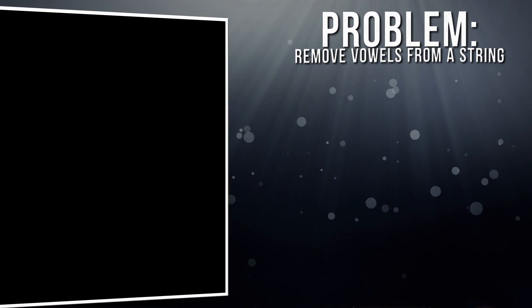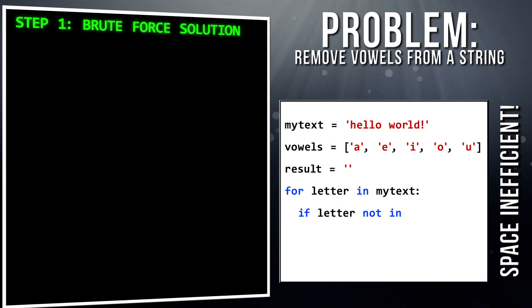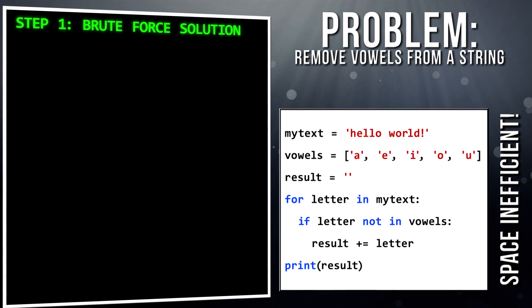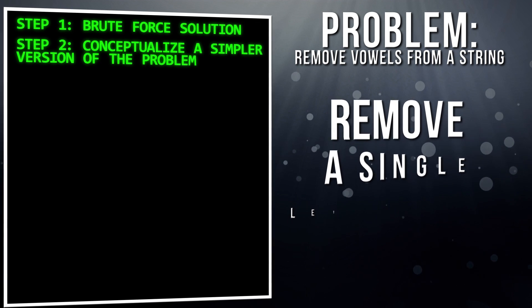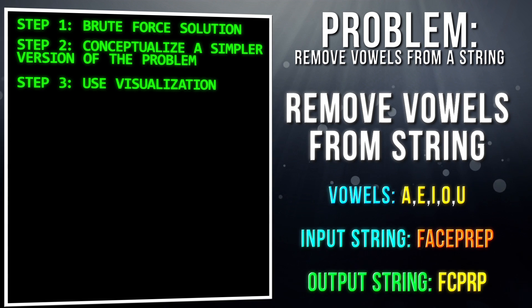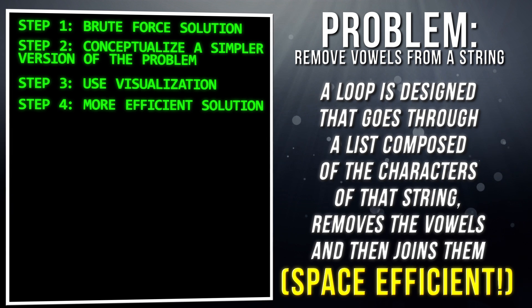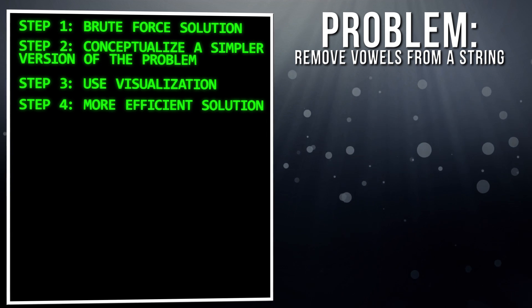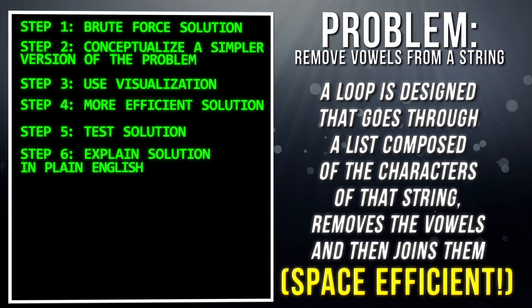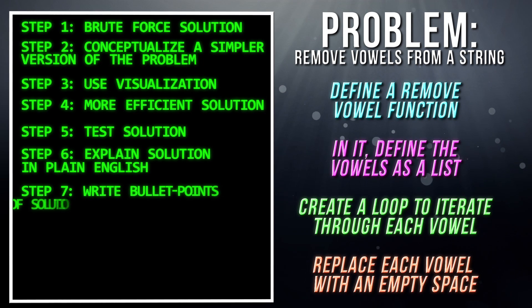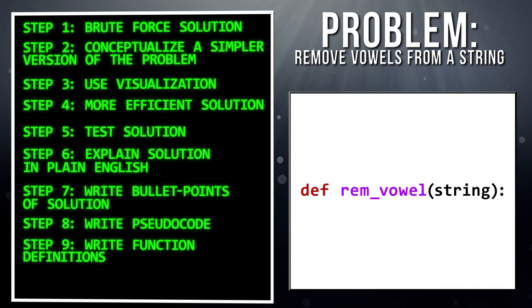I've defined a meta-algorithm for you, an algorithm that helps you solve algorithms. First, come up with a brute force solution. That means not necessarily the most efficient solution, but the one that will at least work. Then think of a simpler version of the problem. Try noticing a pattern with the simpler examples. Use a visualization to aid you in thinking about it. Then use the visualization and any patterns you learned from the simple example to try to come up with an even more efficient solution for the original problem. Then test your solution on a few examples to ensure it works. Once you have your solution, explain it out loud in plain English. Then write it out step-by-step as bullet points. Then write it out as pseudocode. Then the necessary function definitions. And finally, the implementation.